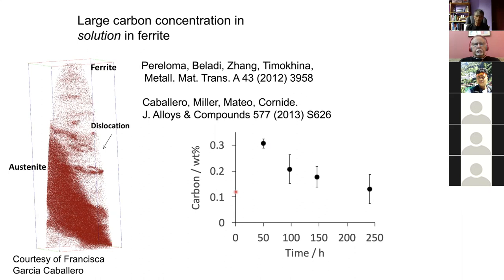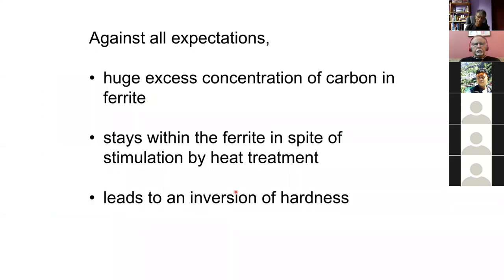The carbon concentration is orders of magnitude higher than the equilibrium solubility. There is a huge excess of carbon in the ferrite, and it stays there in spite of the heat treatment. In fact, in steels like this the austenite is normally harder than the ferrite, but here the ferrite is harder than the austenite because a large part of the carbon is remaining in the ferrite. What is the reason for this?